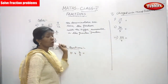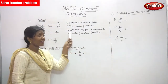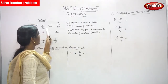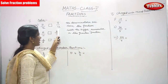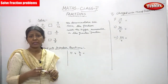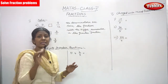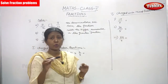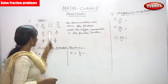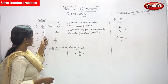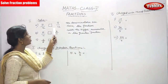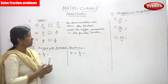Now we are going to solve some fraction problems. The first one is 7 by 12 and 9 by 12. I have told you already what a like fraction is — if the denominators are the same in all the fractions, it is a like fraction. So look at the numbers 7 by 12 and 9 by 12, and find out which is the greater fraction.